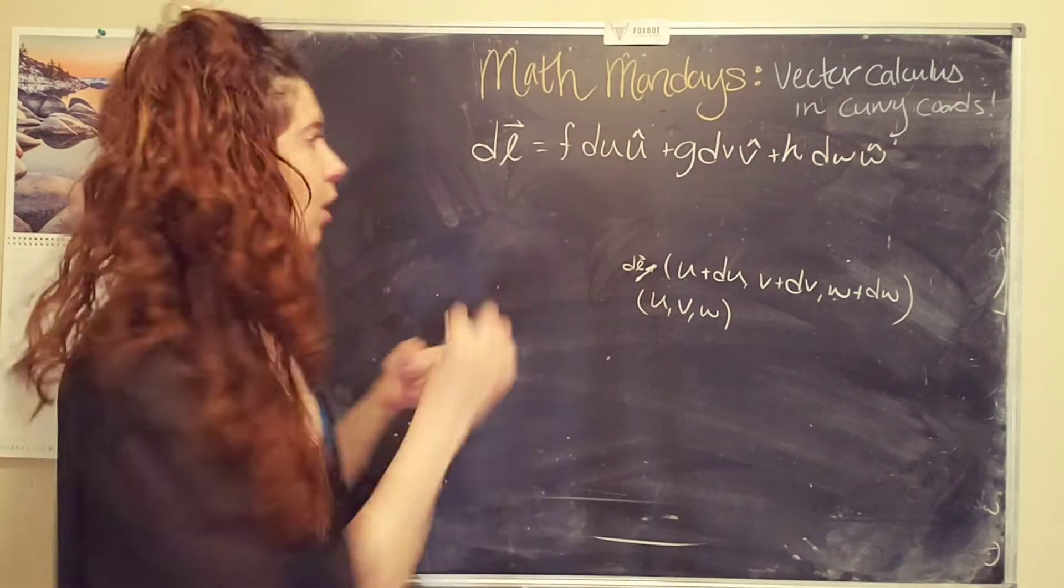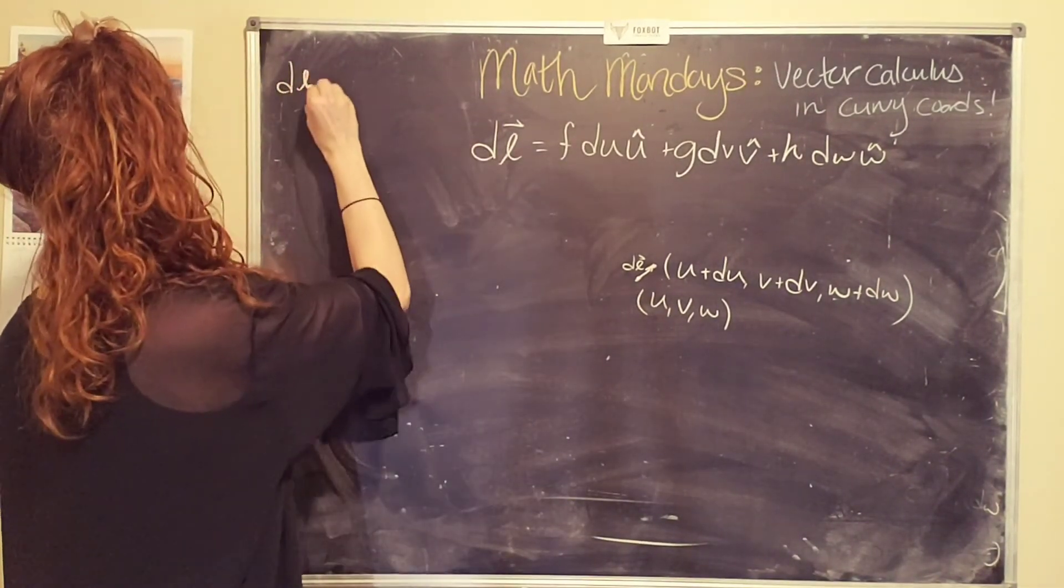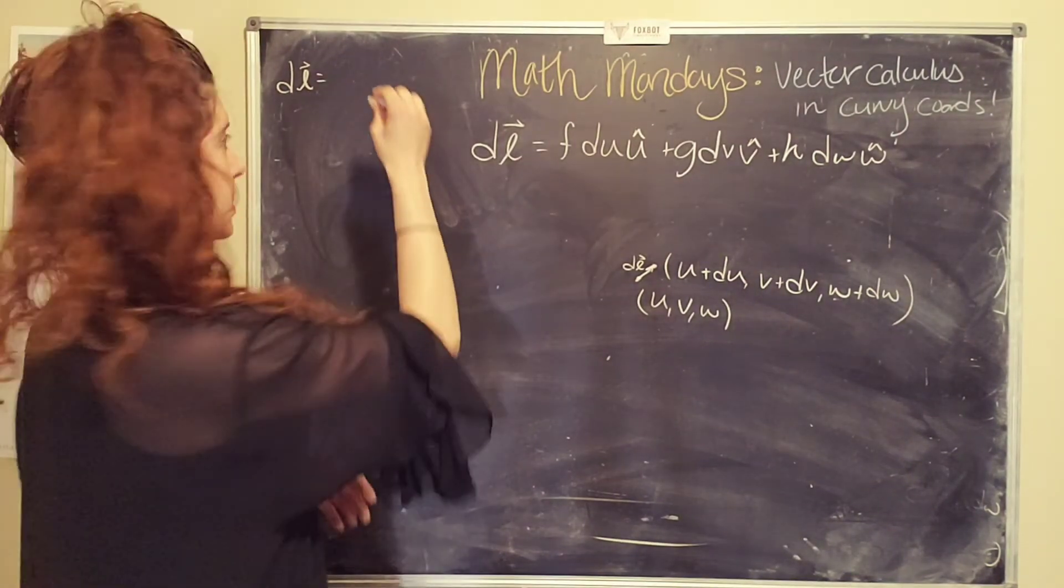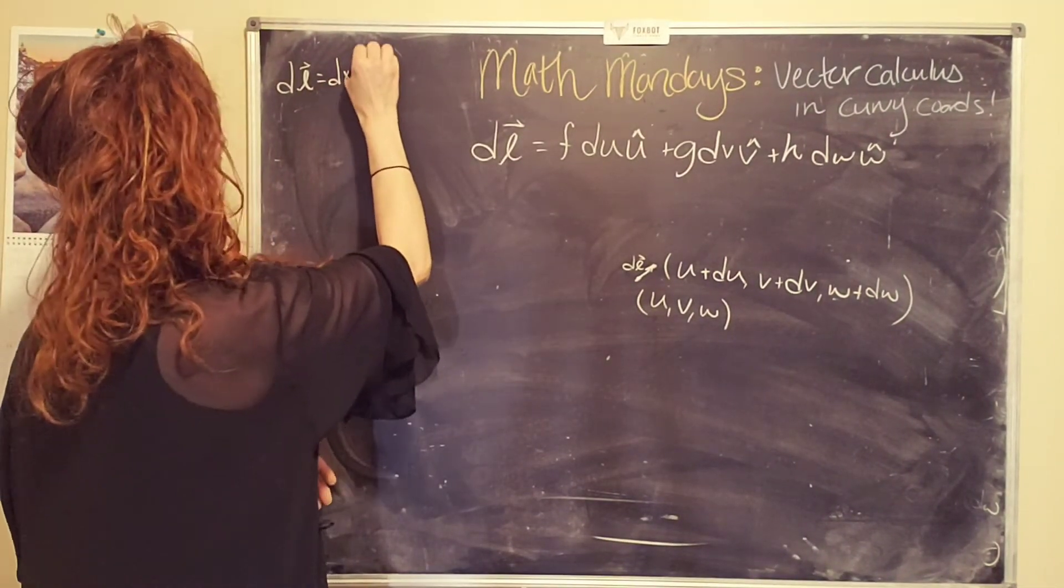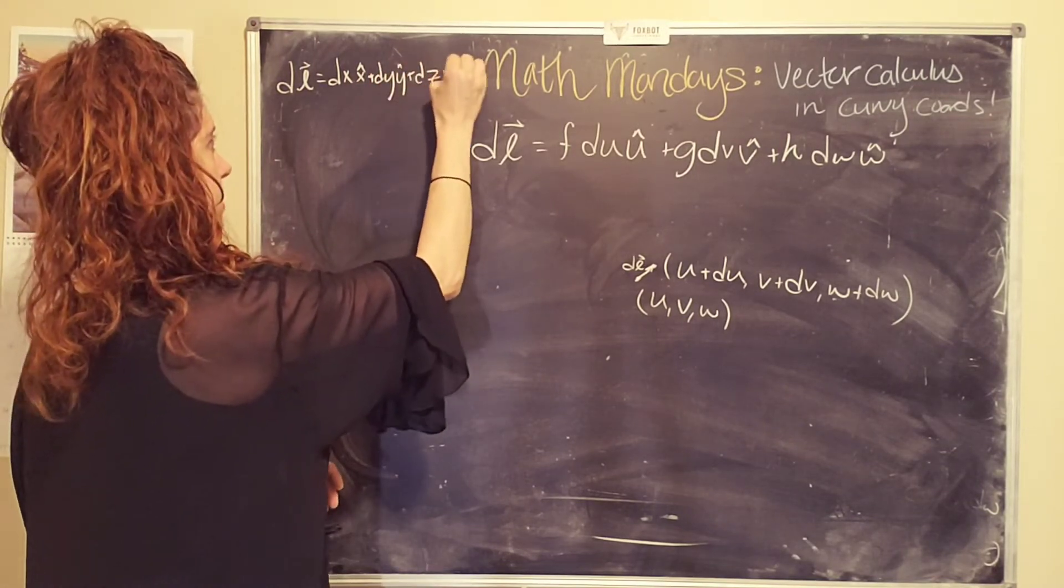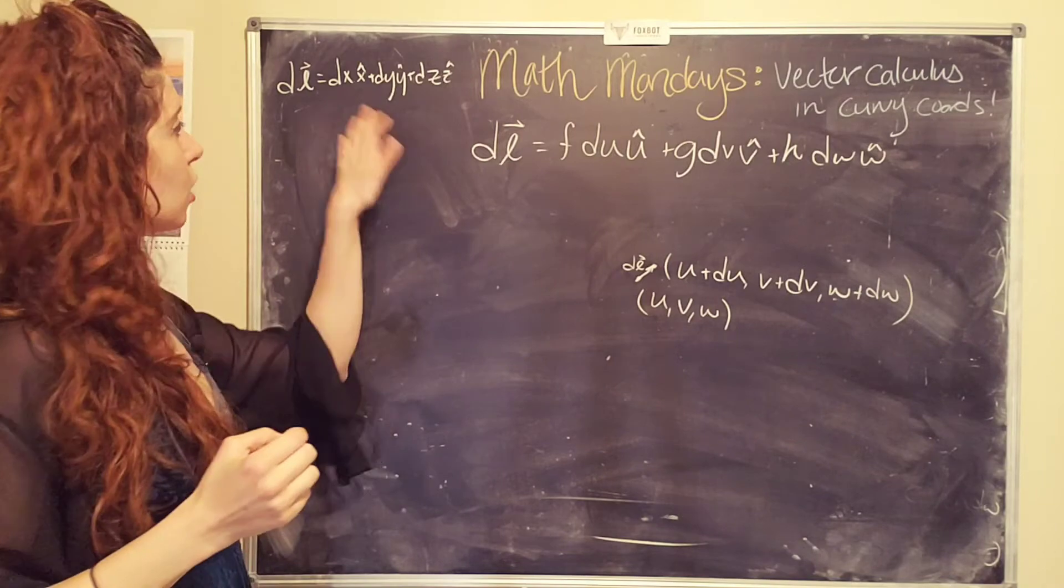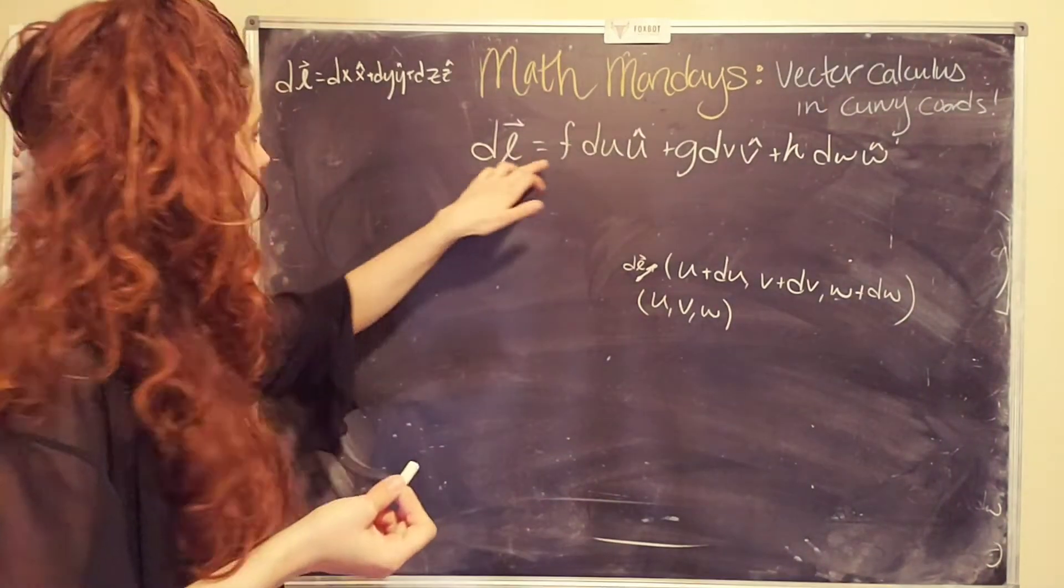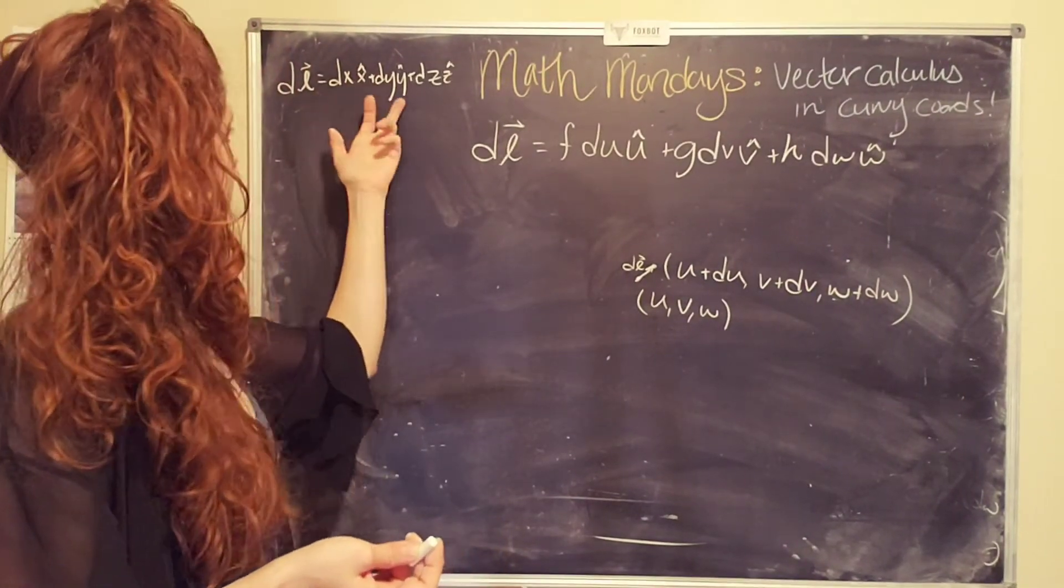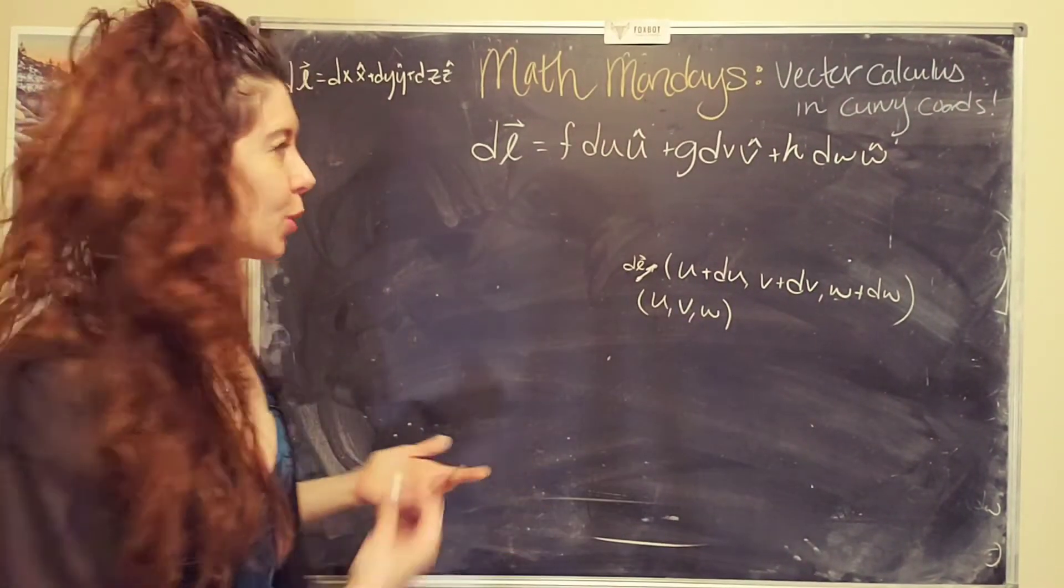But if we go back to what we know about the infinitesimal displacement vectors in other systems, if we have our Cartesian coordinate system, we have dx, x hat, plus dy, y hat, plus dz, z hat. So now we can compare the two and say, oh, okay, well, in this case, f, g, and h are just one, because there's nothing in front of this dx, dy, or dz.